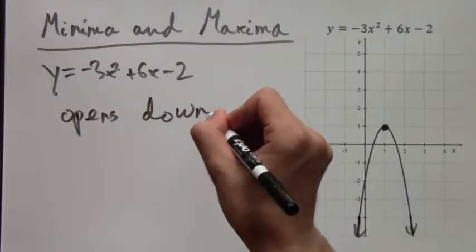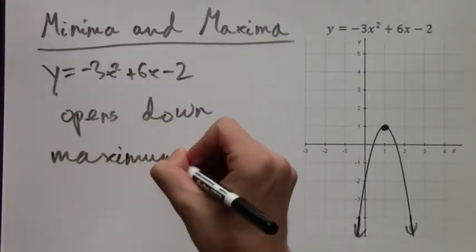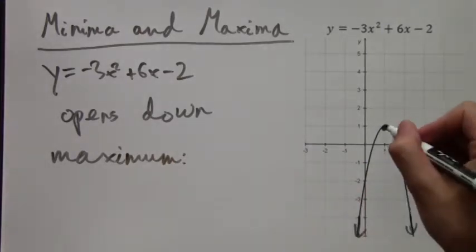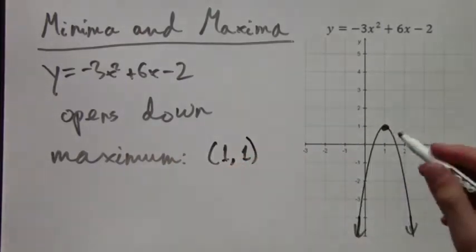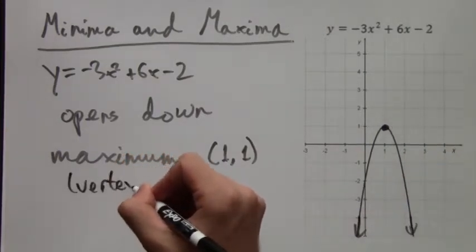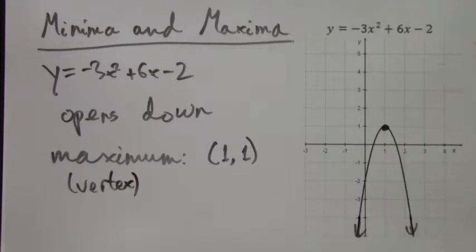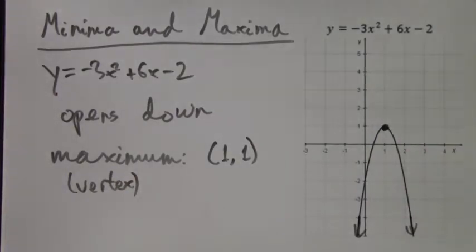This means that the parabola goes up, and then at this maximum, it curves back down. Now, this maximum, the point (1, 1), also happens to be the vertex of the parabola. This is always the case. The vertex of the parabola is either a maximum or a minimum. Which one depends on which way the parabola opens.